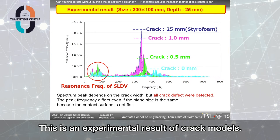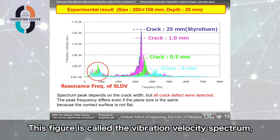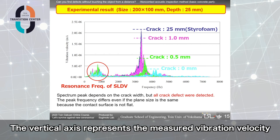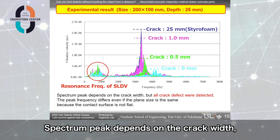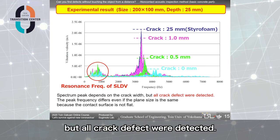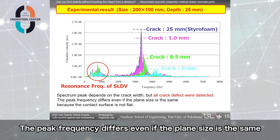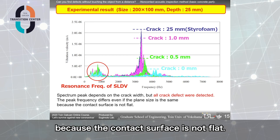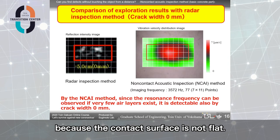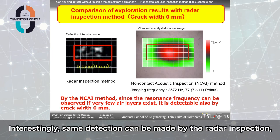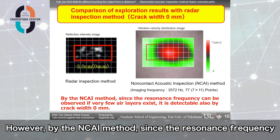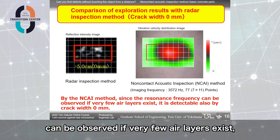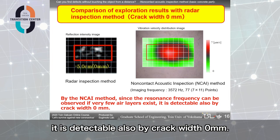This is an experimental result of crack models. This figure is called the vibration velocity spectrum. The vertical axis represents the measured vibration velocity, and the horizontal axis represents the frequency. From this figure, spectrum peak depends on the crack width, but all crack defects were detected. The peak frequency differs even if the plane size is the same because the contact surface is not flat. Interestingly, semi-detection can be made by the radar inspection, but when the crack width is 0mm, it is difficult to detect the defect. However, by the NCI method, since the resonance frequency can be observed if very few air layers exist, it is detectable also by crack width 0mm.